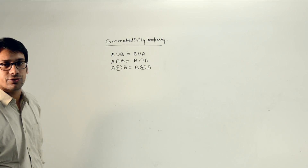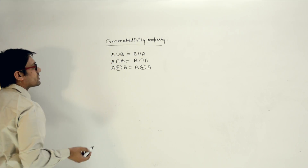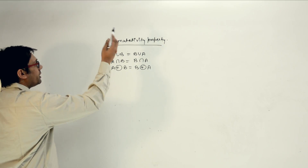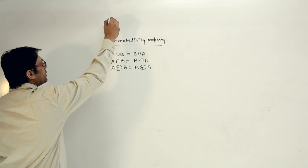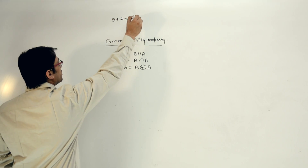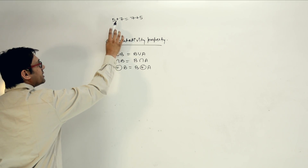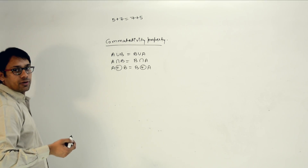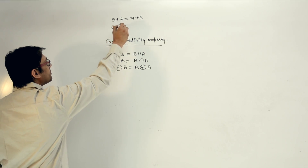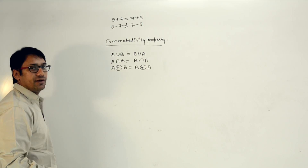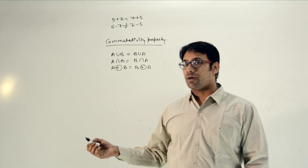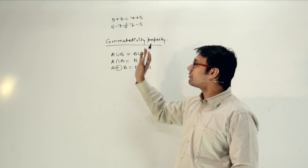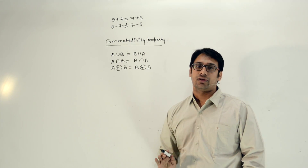Why do we actually need to study this property? In mathematics, you know the set of integer numbers. If you perform an addition operation, then 5 plus 7 is equal to 7 plus 5 — the addition operation is commutative. But if you take the subtraction operation, then 5 minus 7 is not equal to 7 minus 5. So the minus operation is not commutative, while the addition operation is.